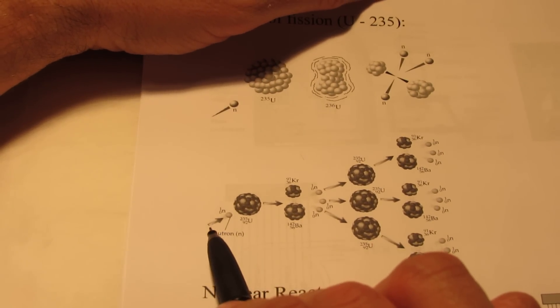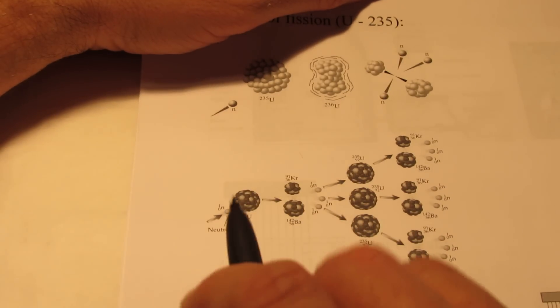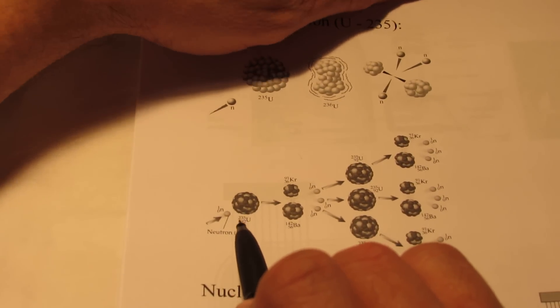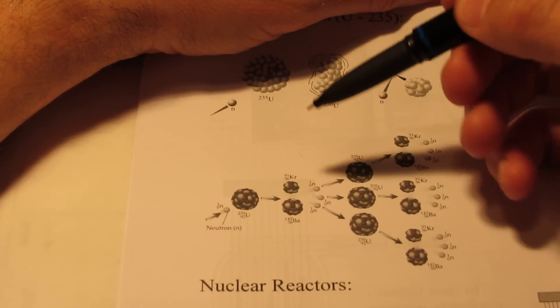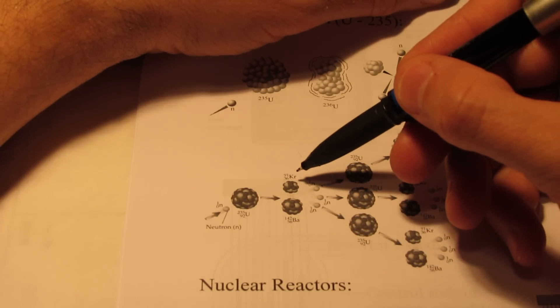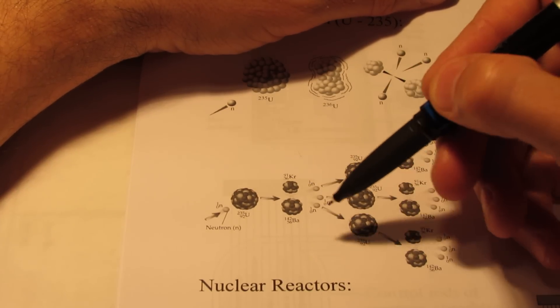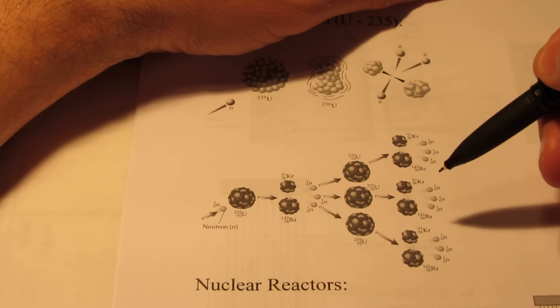So in this particular instance, a neutron moving at just the right speed strikes the nucleus of a uranium-235 atom. It splits it into two lighter nuclei, krypton-91 and barium-142, and three neutrons are produced.